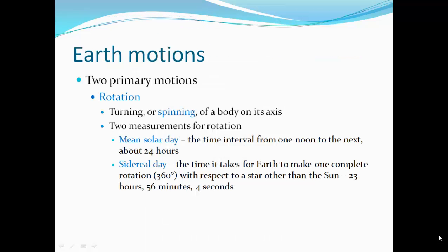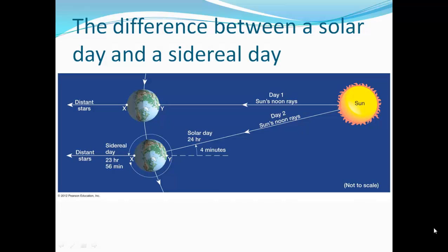Earth's motion has two primary motions. It rotates or turns or spins. The turning or spinning of the body on its axis. And so we measure rotation by the mean solar day. So it's the time interval from one noon to the next, which is about 24 hours. Sidereal day is the time it takes Earth to make one complete rotation, 360 degrees, with respect to a star other than the sun. So that makes your day just a little shorter, 23 hours, 56 minutes, and 4 seconds.